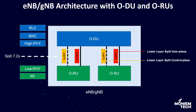Here you can see: ODU is the ORAN Distributed Unit, and this is a logical node hosting the RLC, MAC, and high physical layer based on something called the lower layer split. The second important node is called ORU, and it is also a logical node hosting the low physical and RF processing based on a lower layer function split.